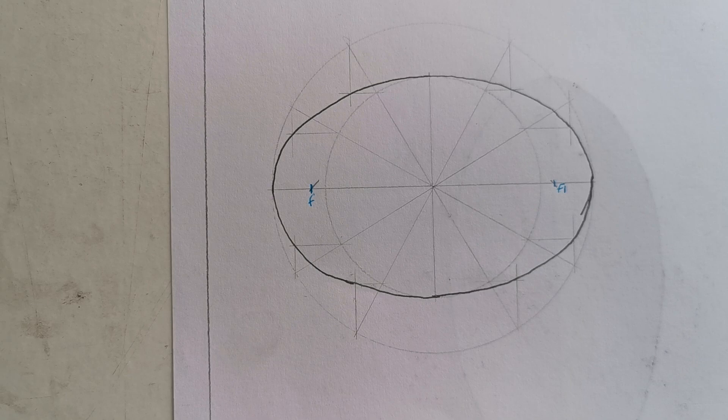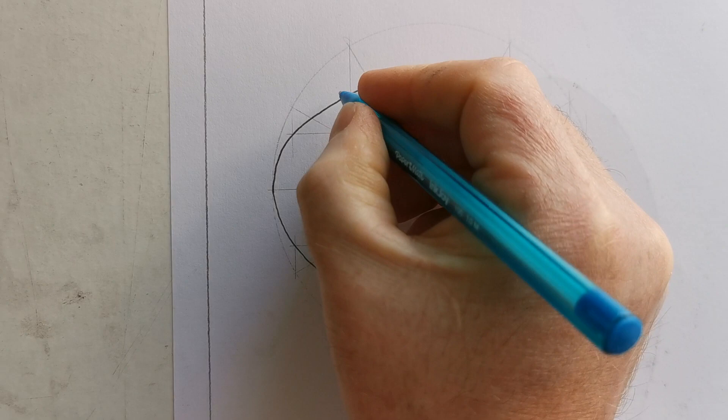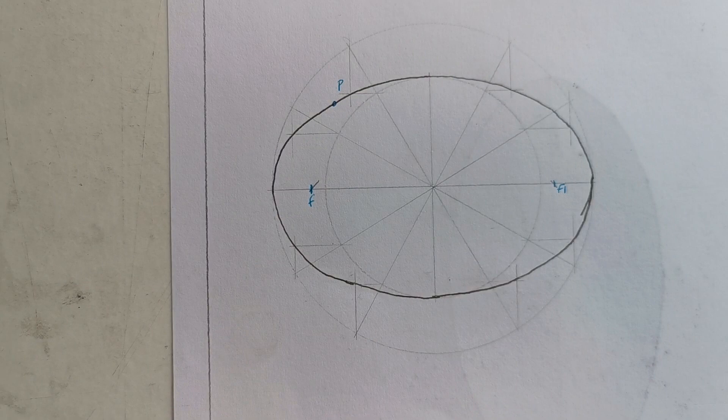So what I want to look at here is drawing a tangent to a point that's on the ellipse itself. I'm going to pick a random point P here.